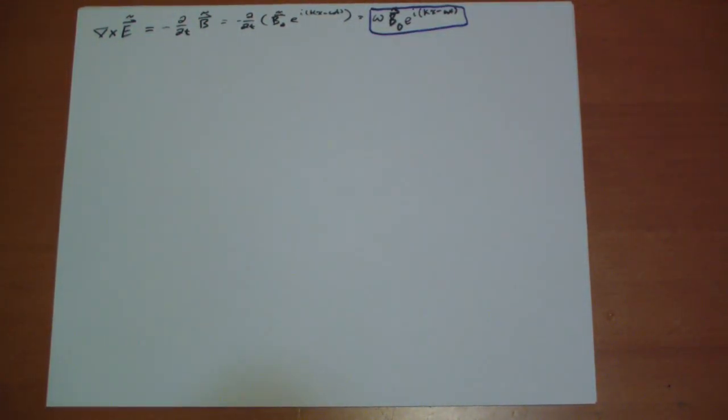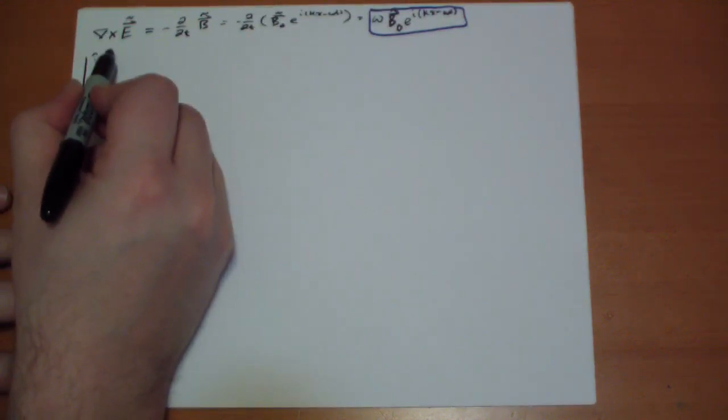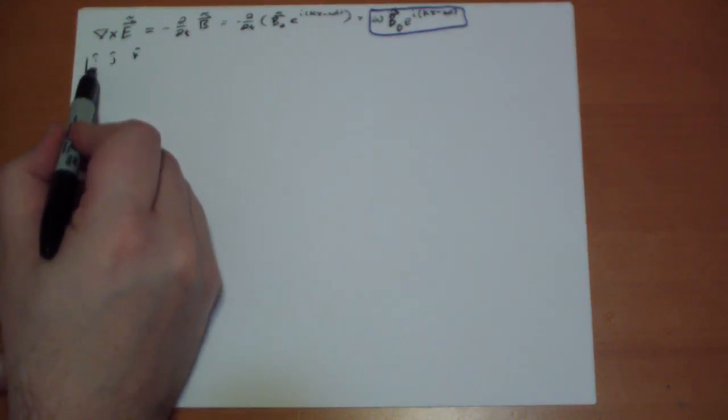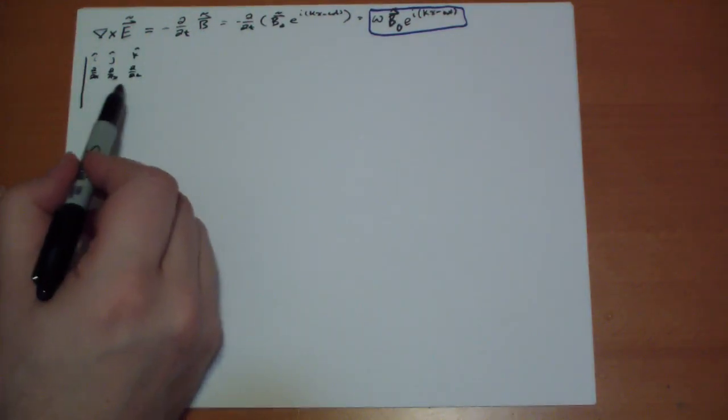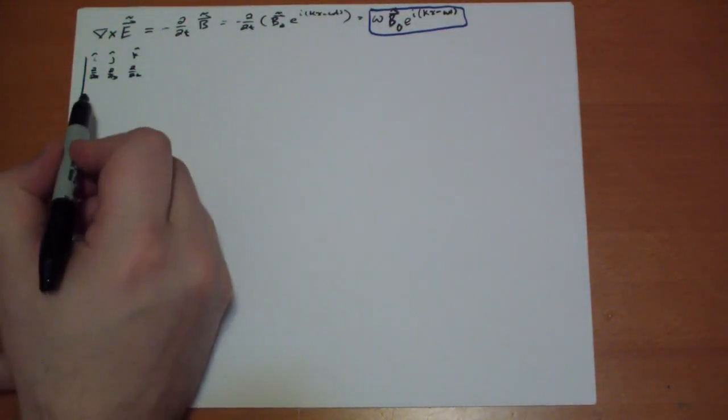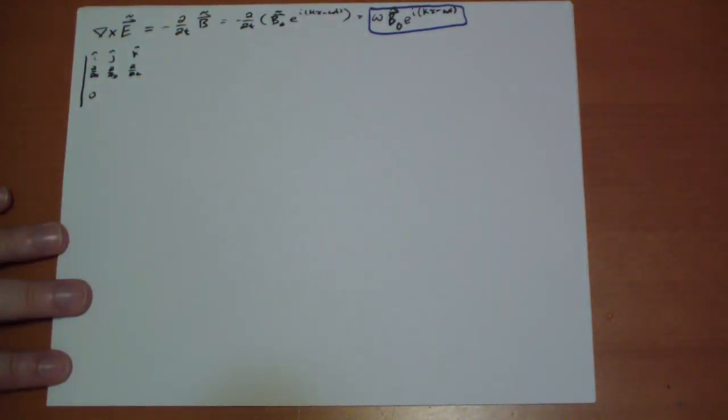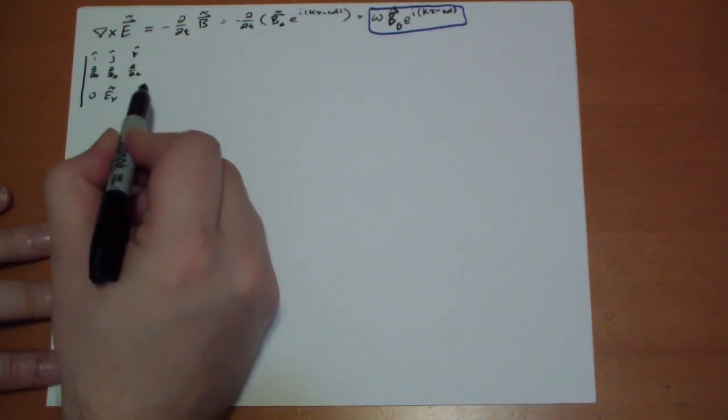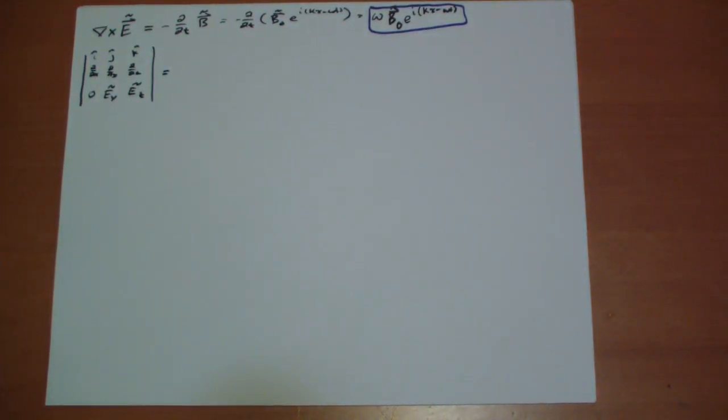The curl of E, and I think it's probably been a little bit of time since you've last examined a curl, so I'm just going to draw this out in its full glory. This is the determinant where you have i hat, j hat, and k hat on the top, you have D by DX, D by DY, D by DZ, and then you have the X, Y, and Z components. We learned that the X component of the E field is always zero, and then we have our EY and EZ, both going to be complex.